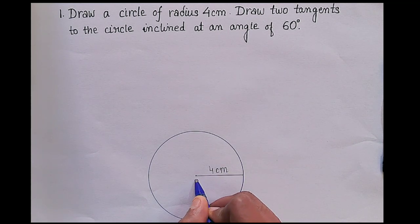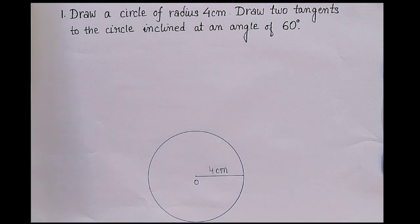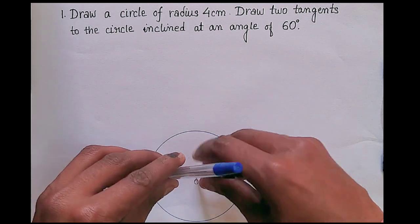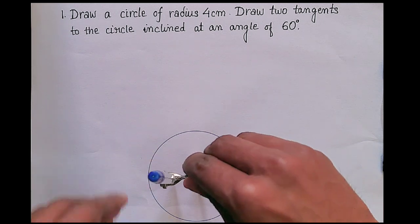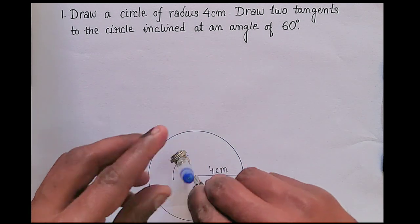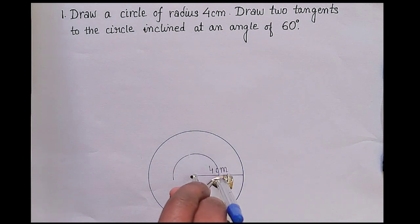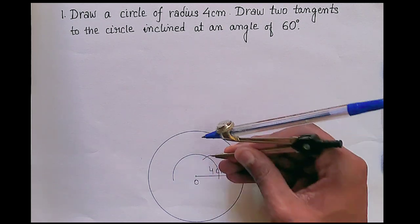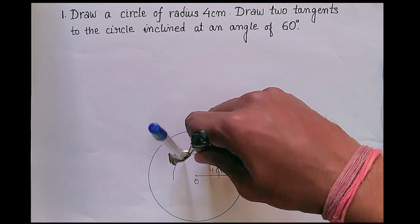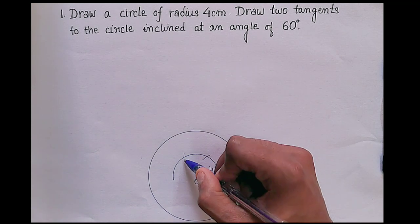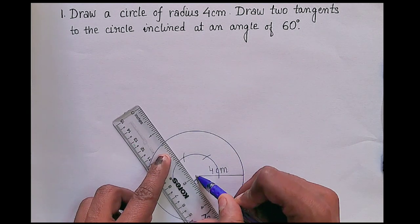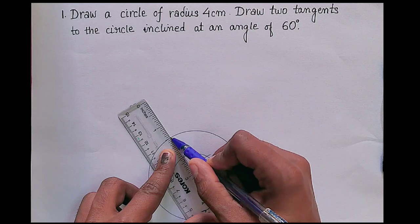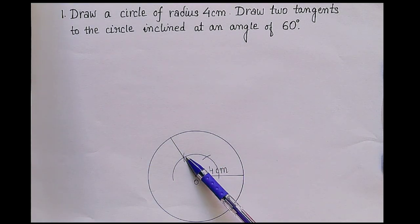This is the center O. Now with the help of compass, from this point draw an angle of 120 degrees. First, draw a semicircle — from here it will be 60 degrees, then from here draw to 120 degrees. Then join these two points. So this angle is 120 degrees.